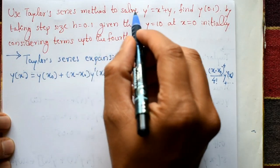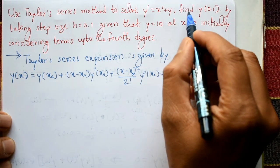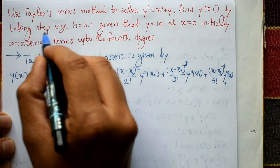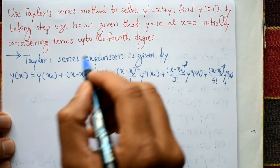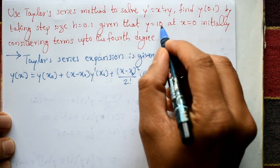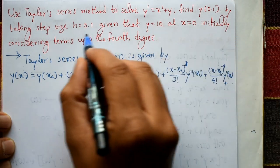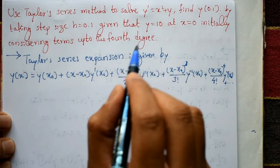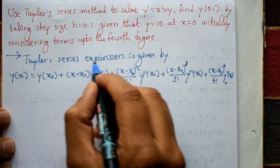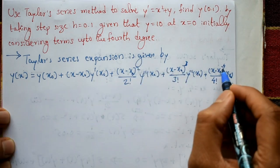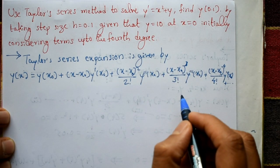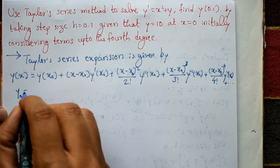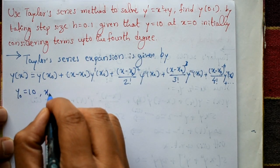Use the Taylor series method to solve y' = x² + y and find the value of y(0.1), taking step size h = 0.1, given that y = 10 at x = 0 as the initial condition. We consider terms up to the fourth degree in the Taylor series expansion. So the initial condition is y₀ = 10 and x₀ = 0.